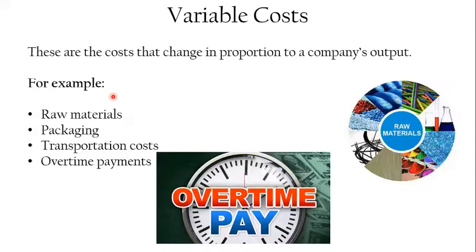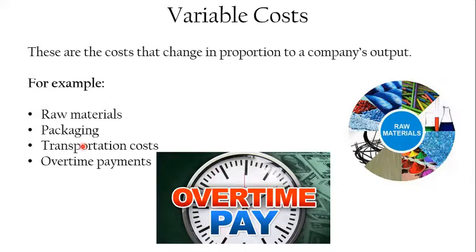Variable costs are costs that change in proportion to a company's output. Examples include raw materials, packaging, transportation costs, and overtime payments. If I make zero cakes, I spend zero on materials. But if I make a million cakes, my raw material costs are far higher because the more cakes I make, the more raw materials I need. The same applies to packaging and transportation — the more cakes I make, the more I need to deliver to customers, so transportation costs rise.